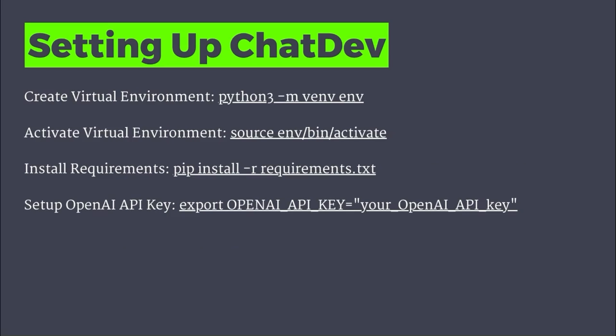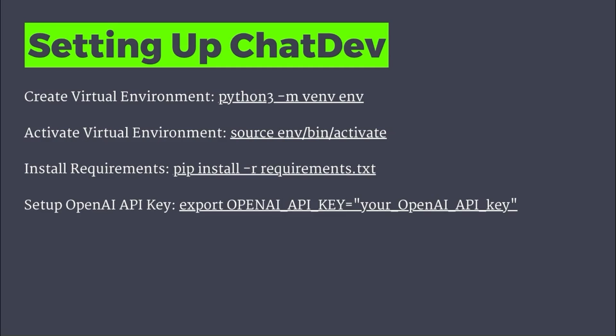Once we've done all that — this is all included in that GitHub repository quick start video explaining all these steps — the next steps we're going to do are creating a virtual environment, then we're going to activate that virtual environment, we're going to install the requirements, which are just all of the different packages that it needs to run, then we're going to set up the OpenAI API key using this command. I wanted to give you a separate screen with all these because they're a little bit hard to see in the demo.